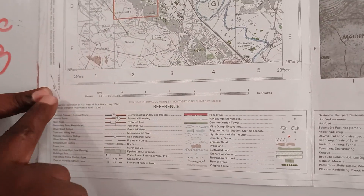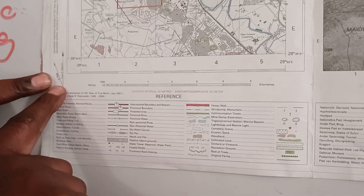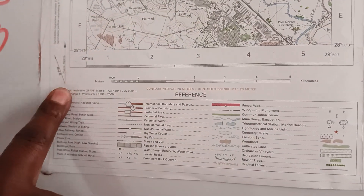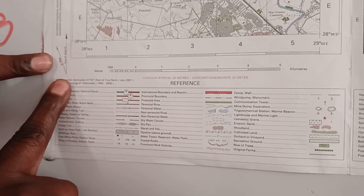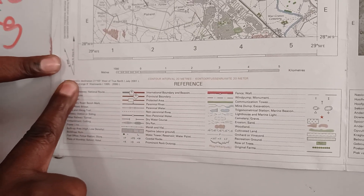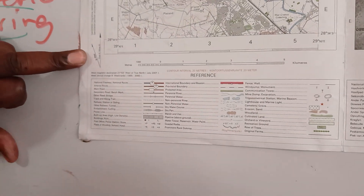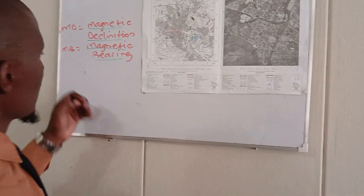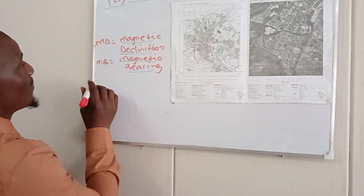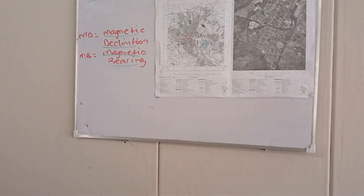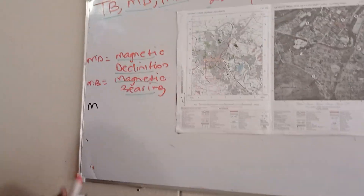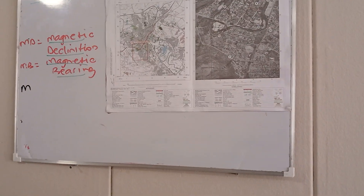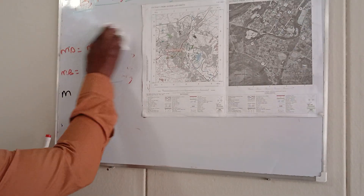Magnetic declination is the difference between your true north and your magnetic north. The rule is: to the west, you add, and to the east, you subtract. According to the maps that we use, it's always to the west. So what you do when you're calculating your magnetic declination, which is your MD — let me clear some space here.